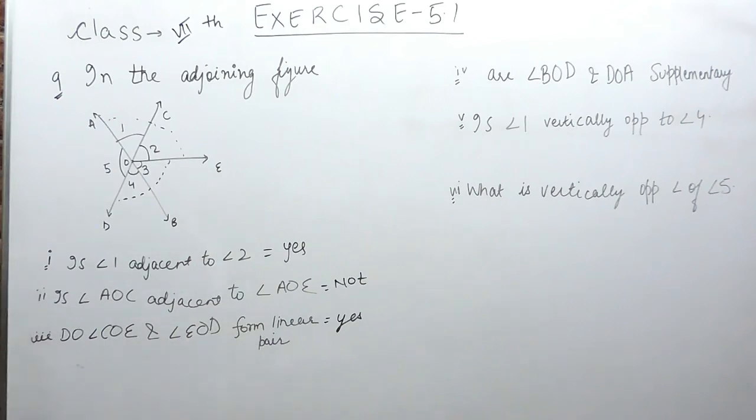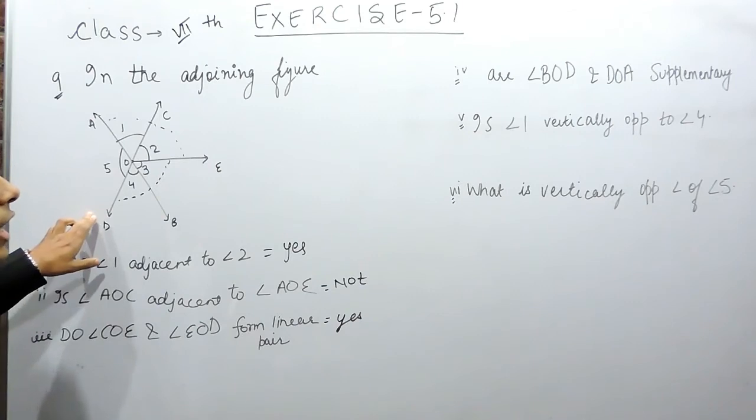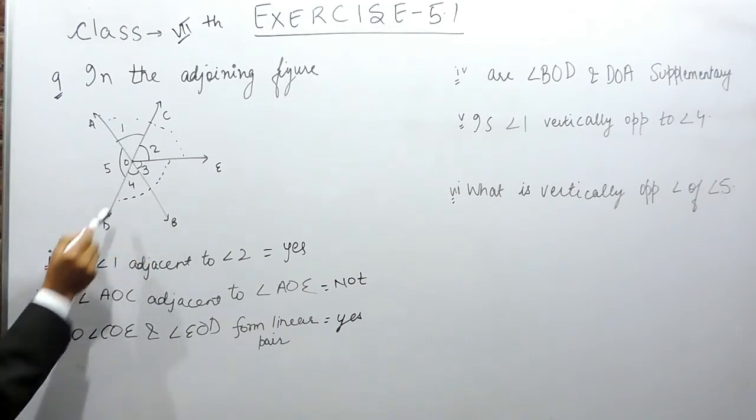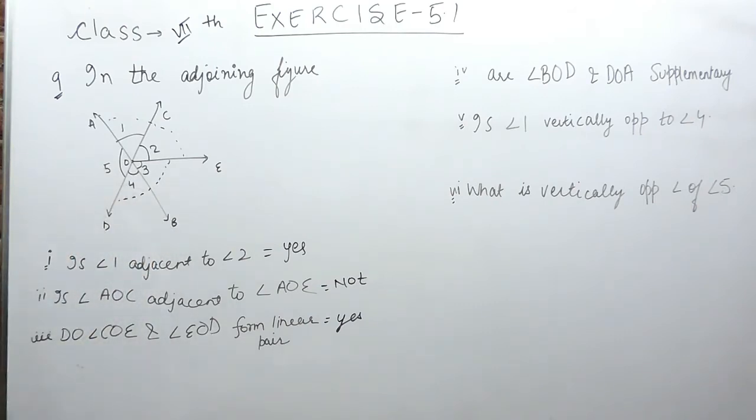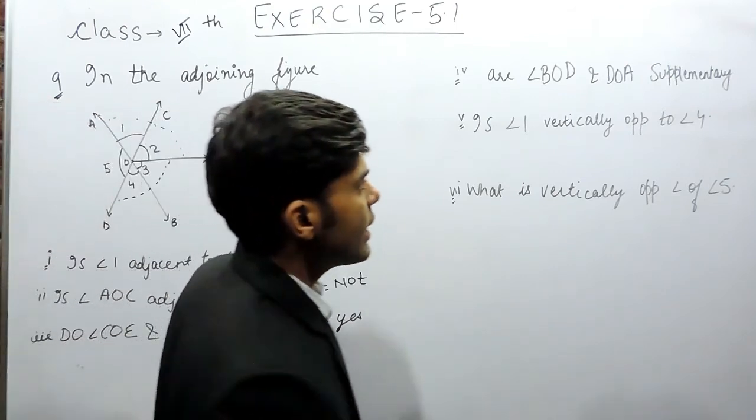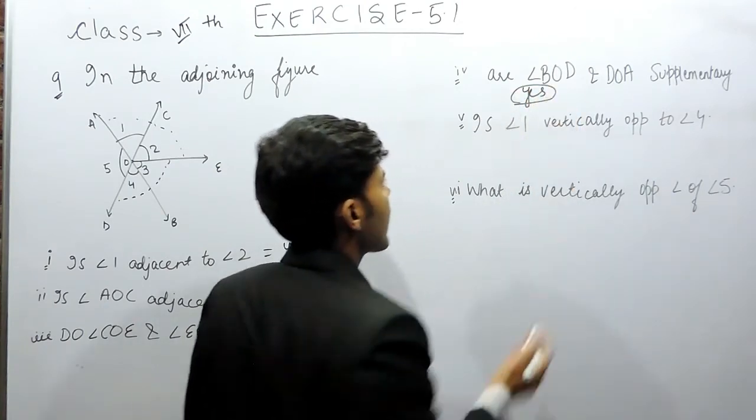Now, angle BOD and angle DOA are supplementary. Now you can see that this is a straight line. This means that angle 4 plus angle 5 will be equal to 180 degrees. And you know that supplementary angles make sum of 180 degrees. So this means that, yes, they are supplementary angles.